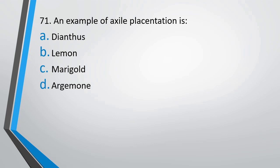Question number 70. An example of axile placentation is: (A) Dianthus, (B) Lemon, (C) Marigold, or (D) Argemone.